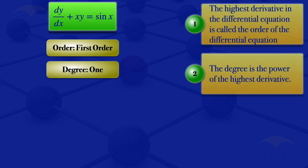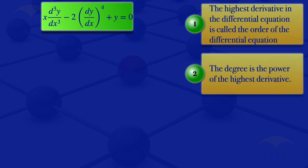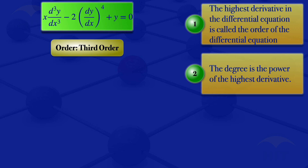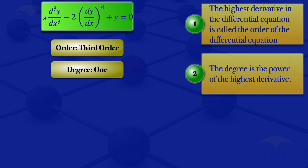Moving on to the next equation: x multiplied by the third derivative of y with respect to x minus the derivative of y with respect to x to the power of 4, plus y equals 0. For the order, the highest derivative is the third derivative, so the order is third order. For the degree, the highest derivative is raised to the power of 1, so the degree is 1. This is a third order ODE with degree 1.